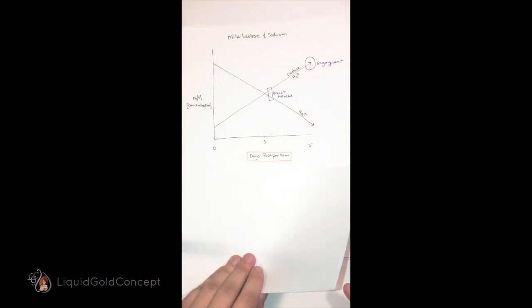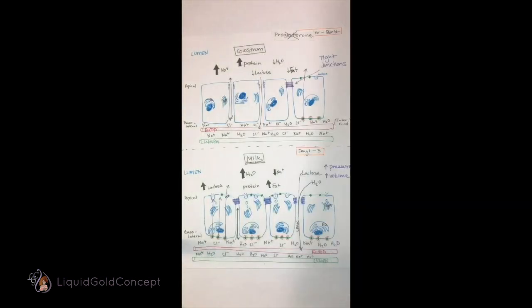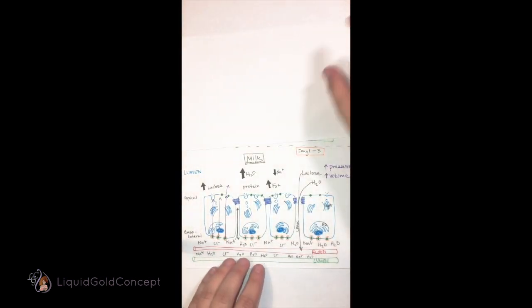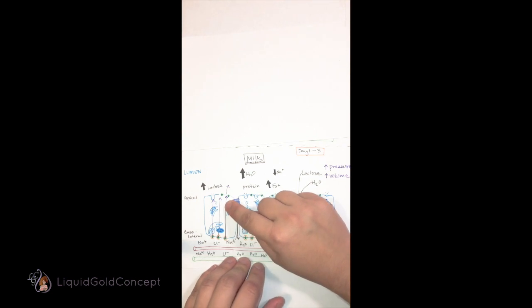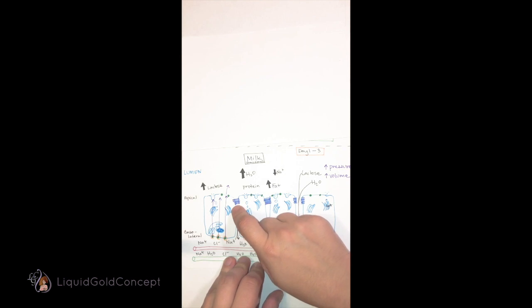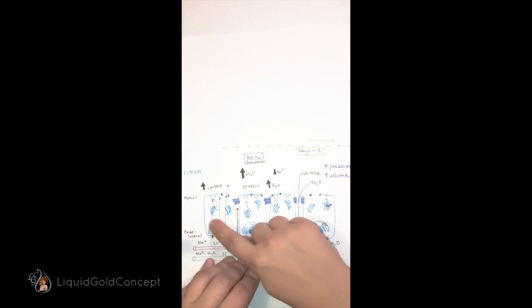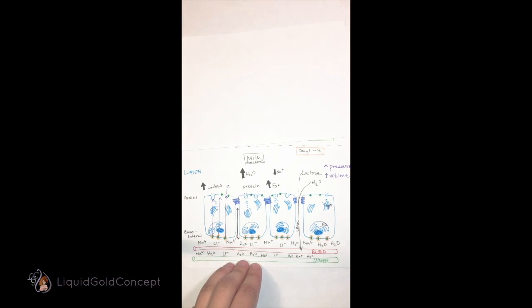These increases are caused by that strict unidirectional flow that is brought upon by the formation of these tight junctions, as well as the growth and expansion within these cells. So much growth has happened that the nucleus is actually pushed down towards the basolateral side of the cell in order to accommodate all of the organelle growth. This is creating that efficiency, that lean, mean milk-producing machine.